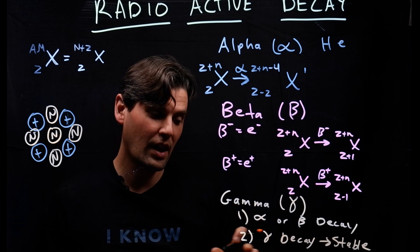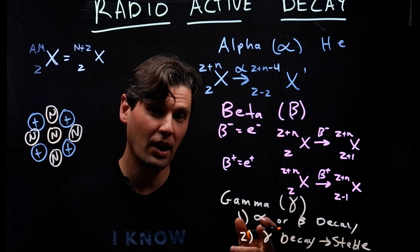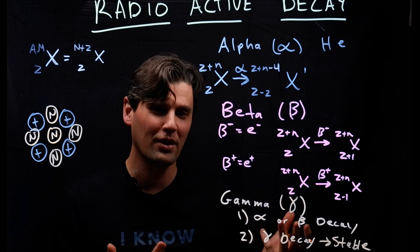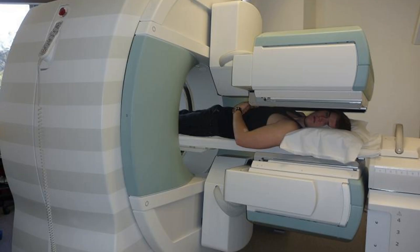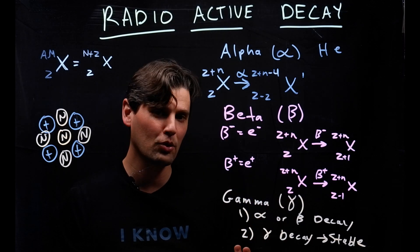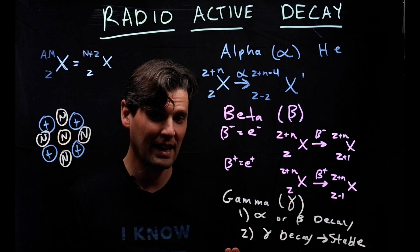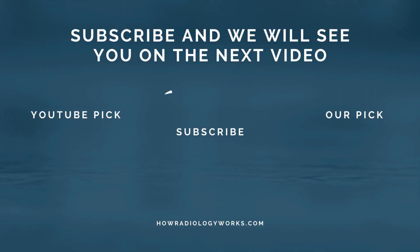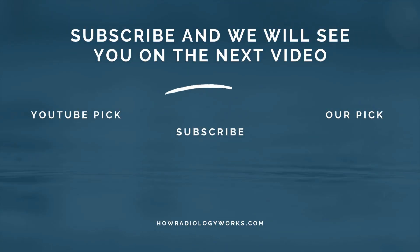This type of decay scenario is what's used in SPECT imaging — single photon emission computed tomography. In SPECT imaging, there are unstable nuclei that will decay, and those gamma rays are what are measured.